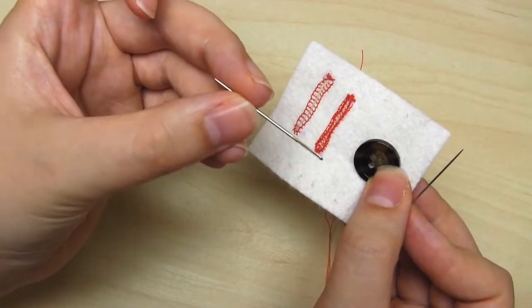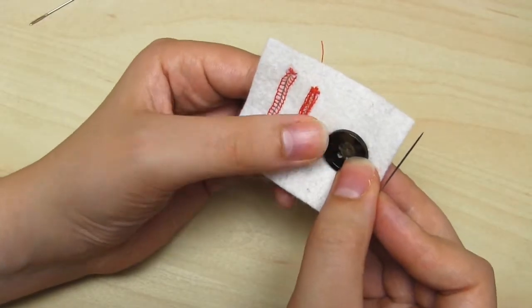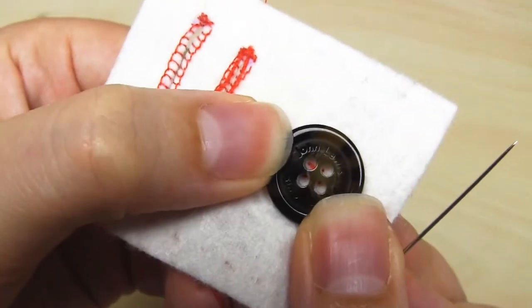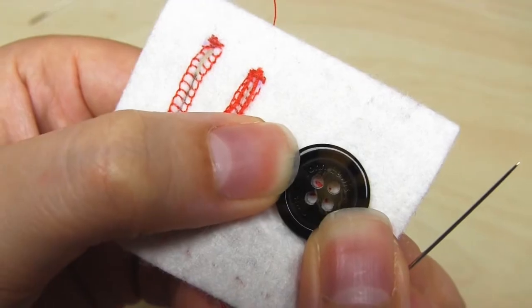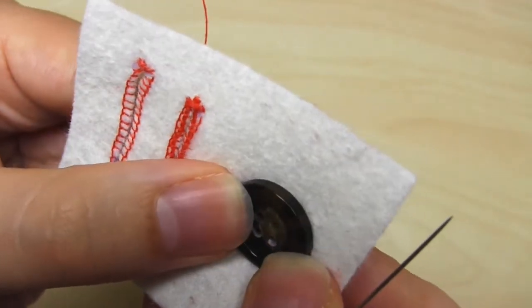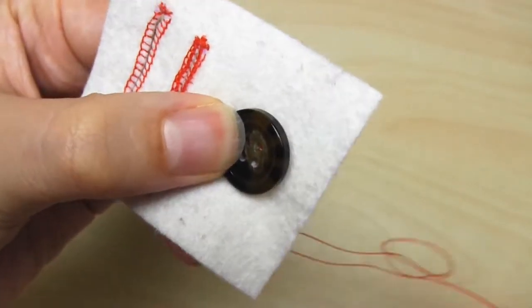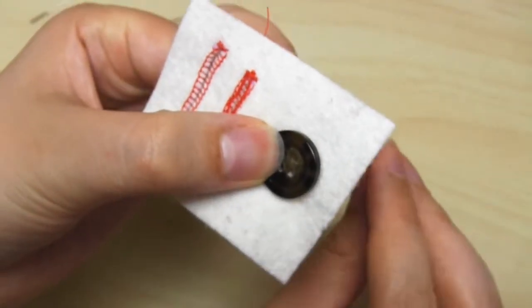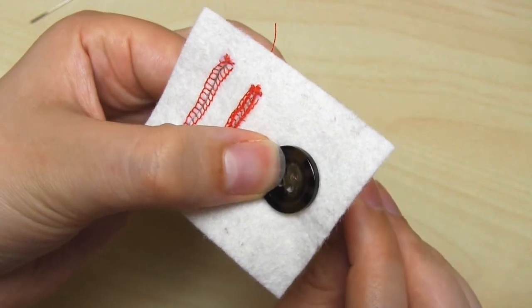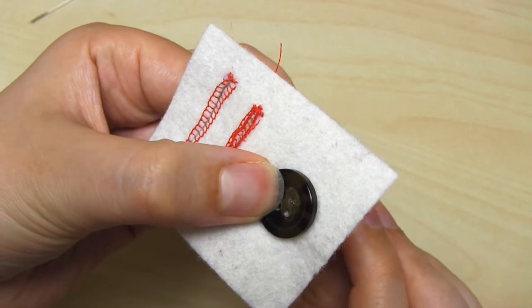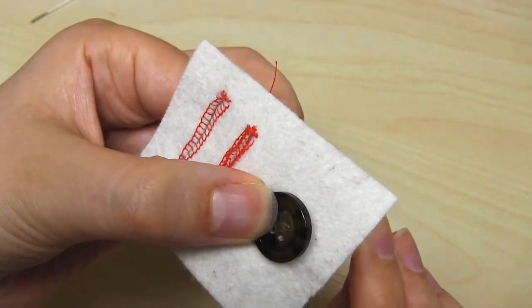If you put the button over the cross, the ends of the stitches should roughly line up with the holes. You now need to hold this button in place over the cross whilst we sew it on. Bring the needle up through the fabric from behind the button, and come through one of the holes.